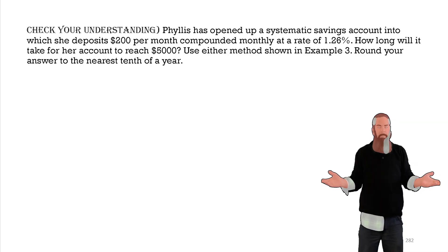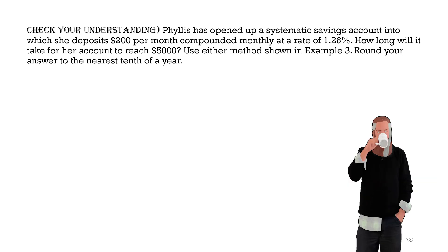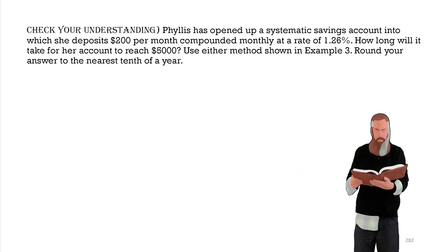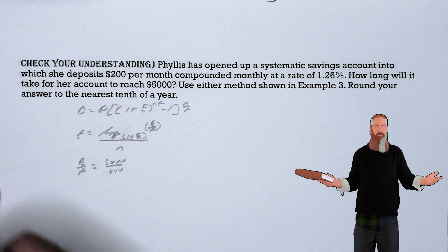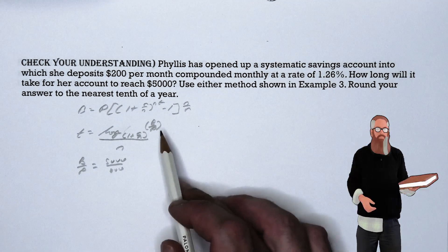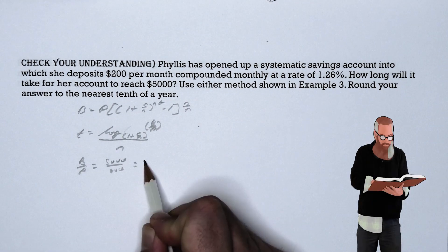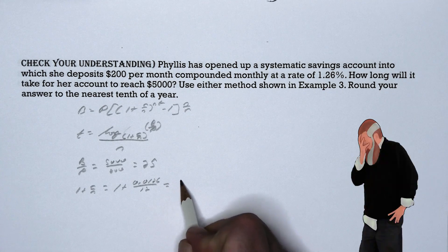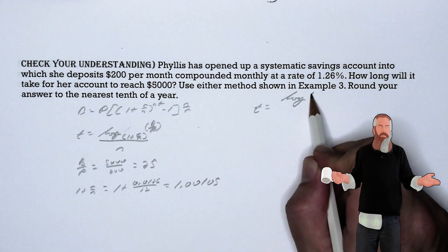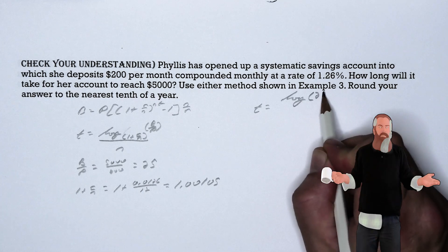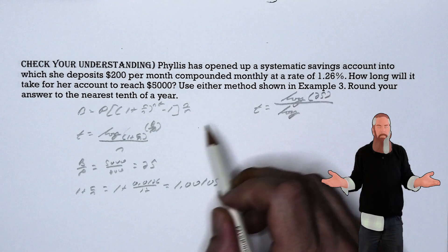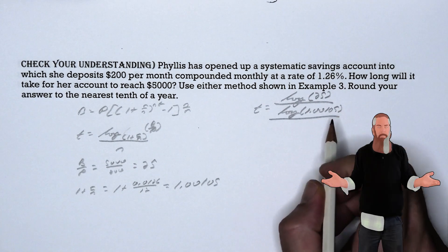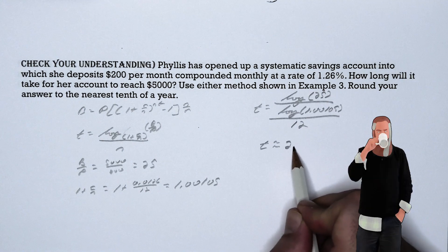Let's check our understanding. Phyllis has opened a systematic savings account into which she deposits $200 per month, compounded monthly at a rate of 1.26%. How long will it take her account to reach $5,000? Round to the nearest tenth. Using the one-to-one property: b over p is 5000 over 200, which is 25. And 1 plus r over n is 1 plus 0.0126 divided by 12, giving 1.00105. Applying the change of base formula, we get log of 25 divided by log of 1.00105, all divided by 12, giving t approximately equal to 2.1 years.